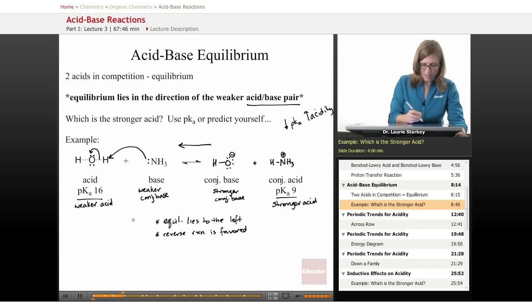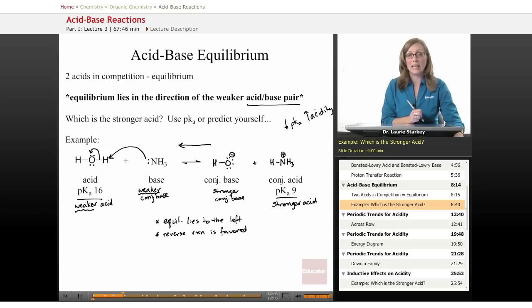So once we identify the weaker acid on one side, it will always correspond with the weaker base being on that same side. So we don't have to compare both the acids and the bases. We just need to find a difference in one or the other, and that should be enough to answer our question.